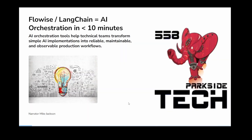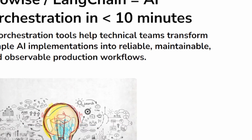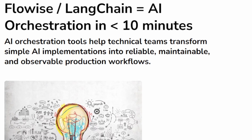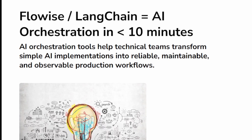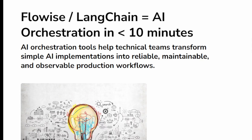Today we're talking about AI orchestration. The definition I've written here is that an orchestration tool helps technical teams transform simple AI implementation into reliable, maintainable, and observable production workflows. Sounds like a mouthful, doesn't it? But let me show you how it's done.